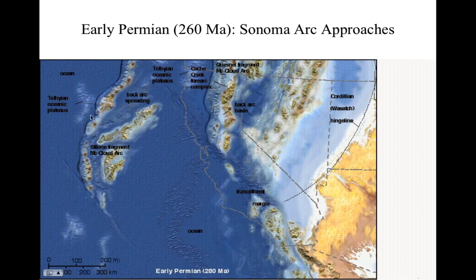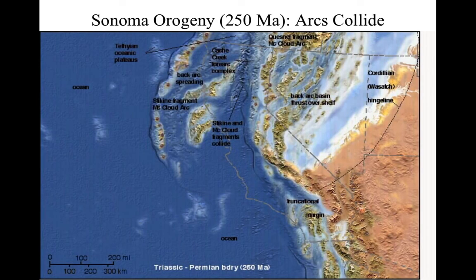Note that offshore we're going to have another island arc forming out over here — these are the Nevada arcs forming back over here. Note that here the subduction is toward the east, so the subduction zone is here and the volcanoes are on the overriding plate. Here is an island arc with Tethian affinity — it's called the McLeod arc there. Then we see the Sonoma orogeny occurring and these Nevadan arcs are getting closer.